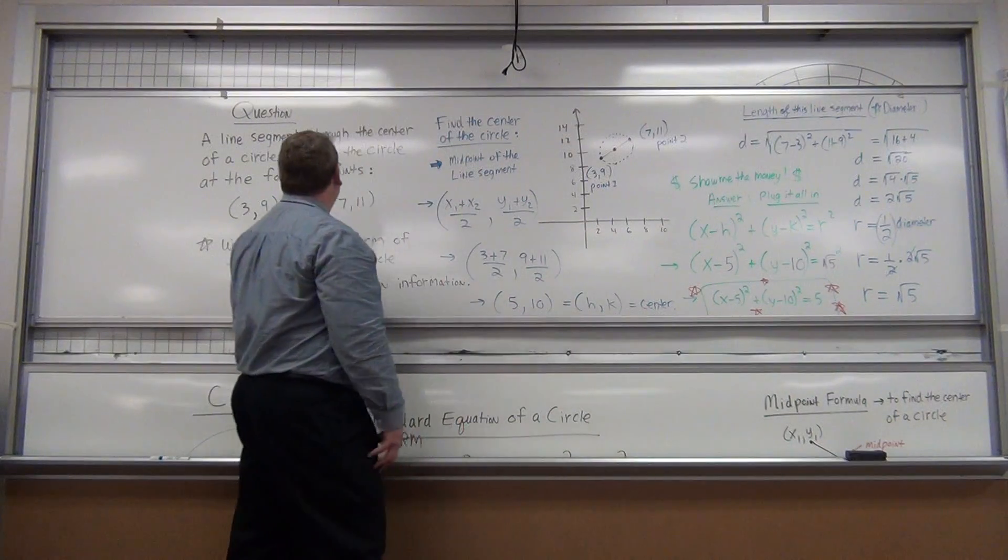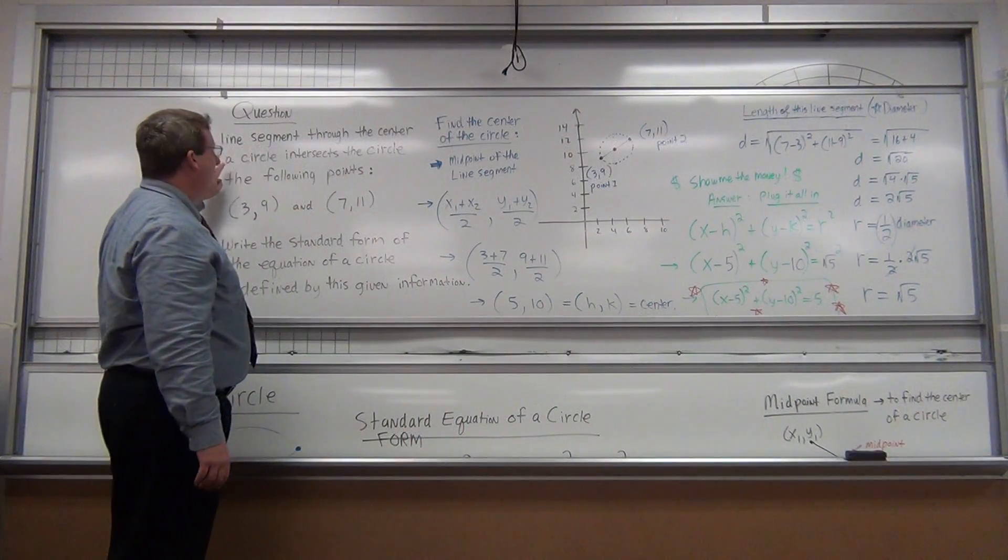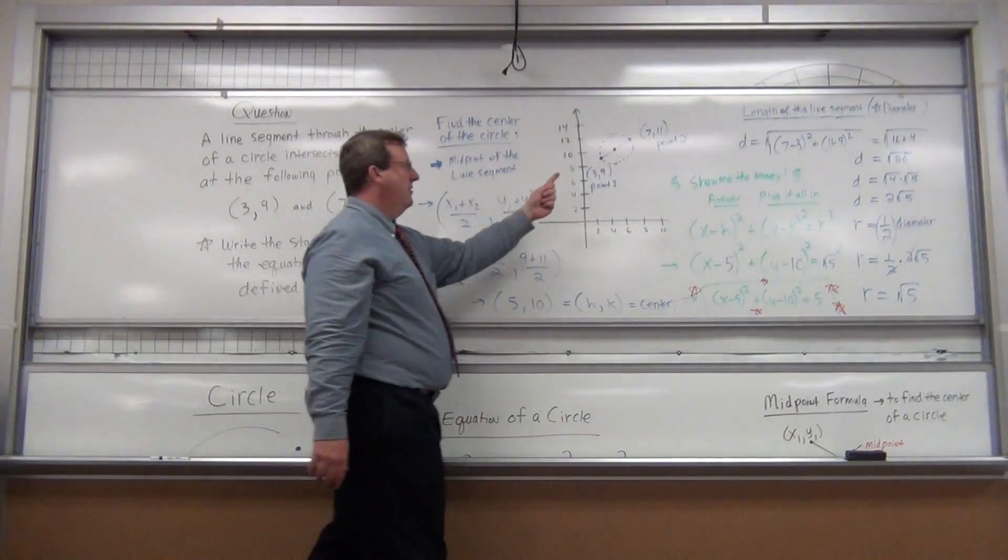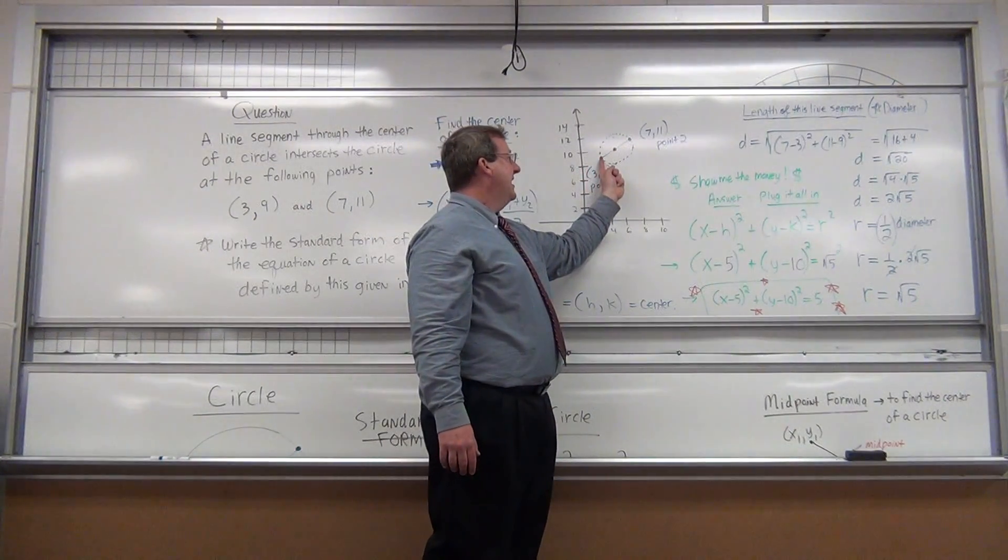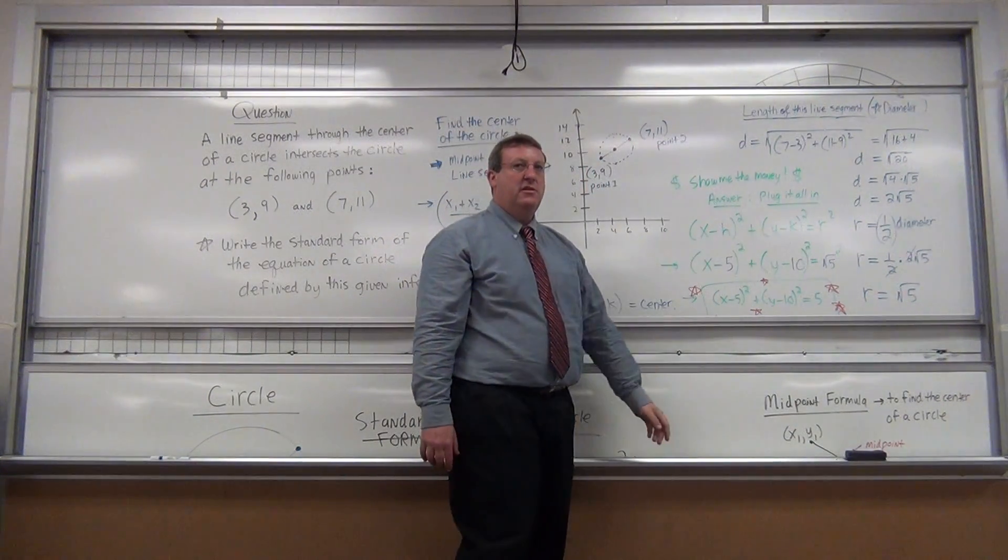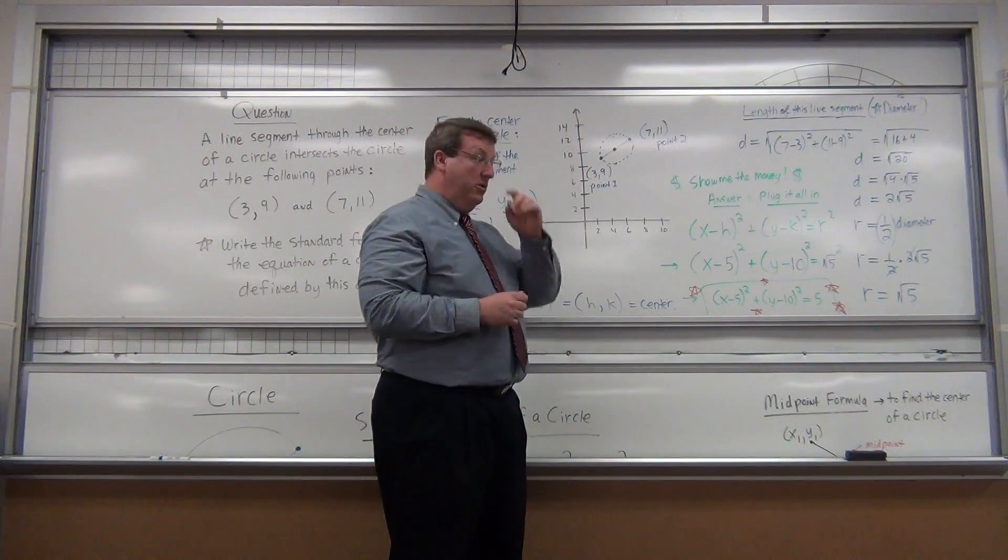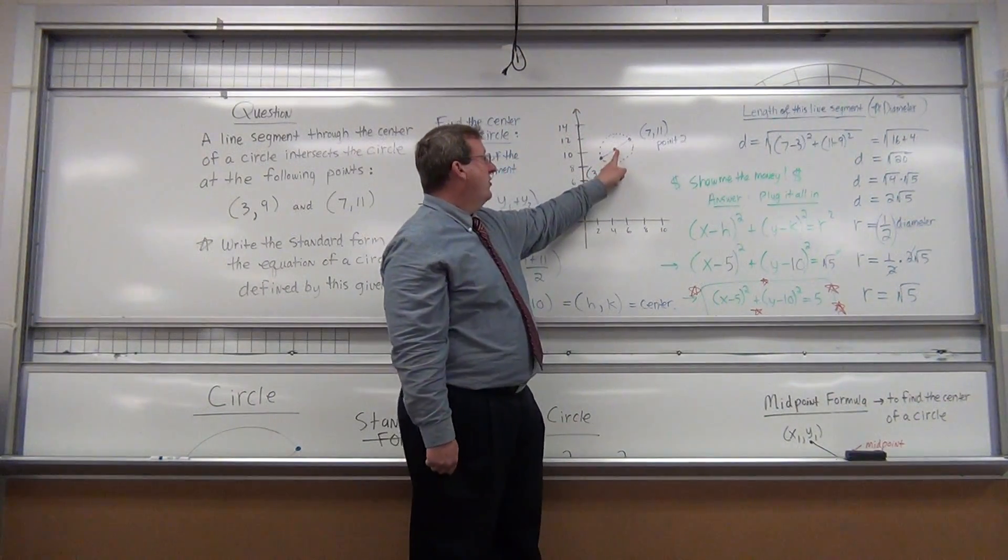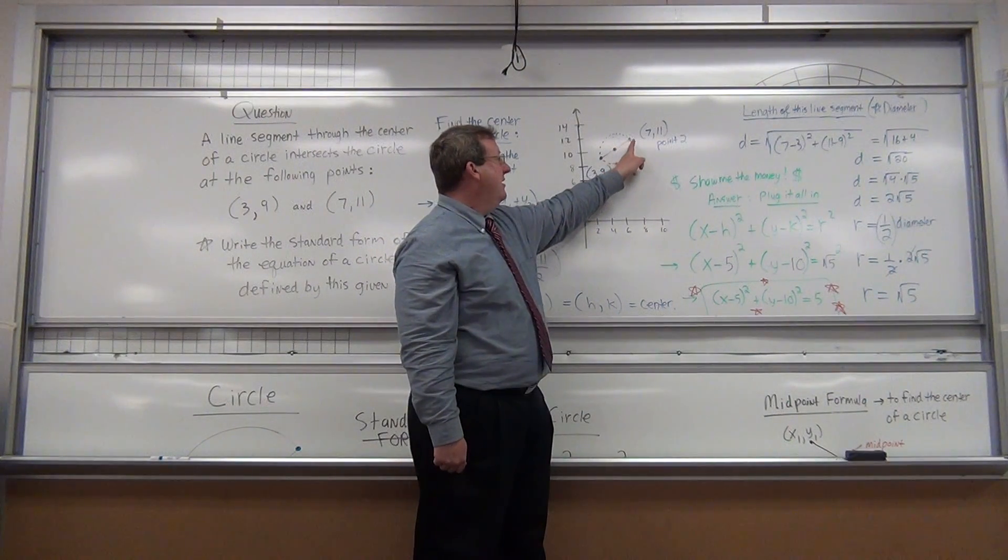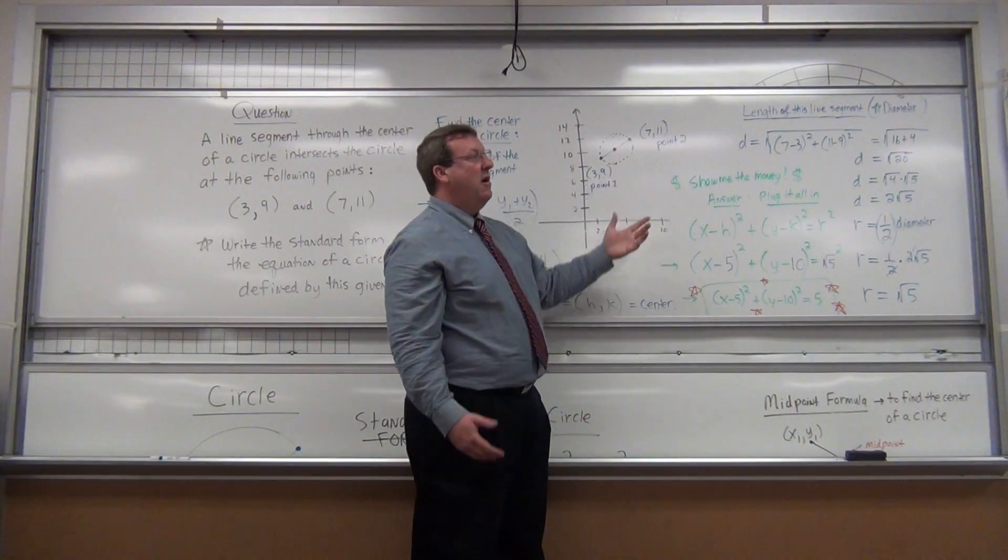Well, it says that a line segment goes through the center of a circle, through to these points. So this line segment goes through the center of the circle. If you draw the picture, you might come to a quick conclusion. The center of the circle has to be midway between these two points.